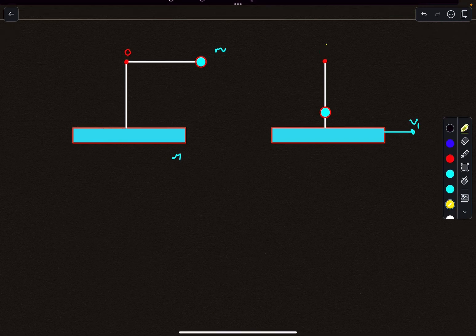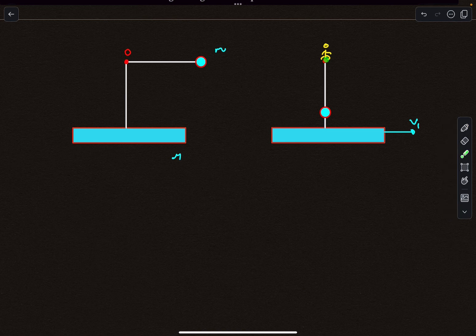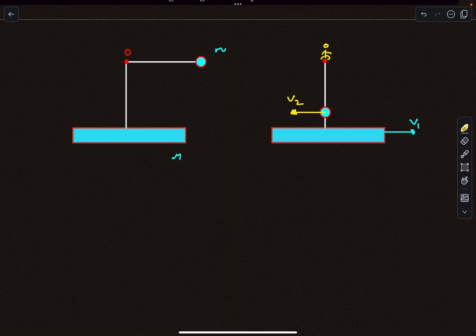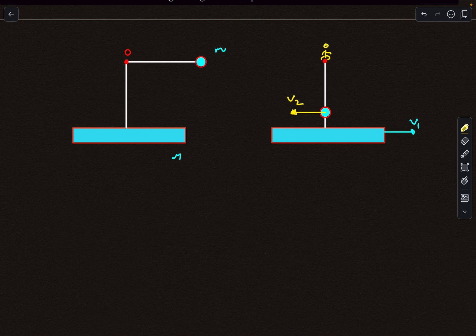Now for the ball, I'm going to imagine a guy sitting over here and observing the motion. With respect to this guy who is in the block's frame of reference, the ball will simply appear to move along a circle. So let's say with respect to this guy, the ball has a velocity of V2. V2 is the relative velocity of the ball with respect to the block's frame.